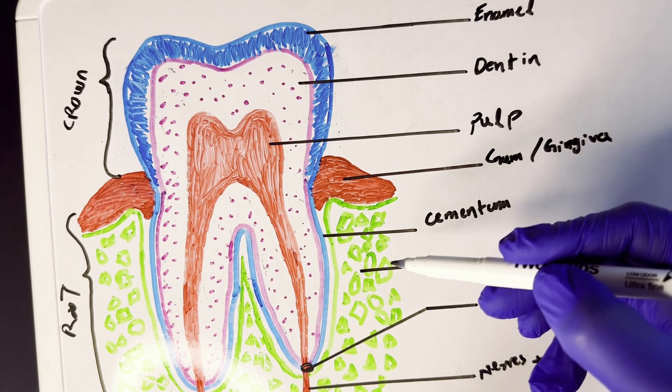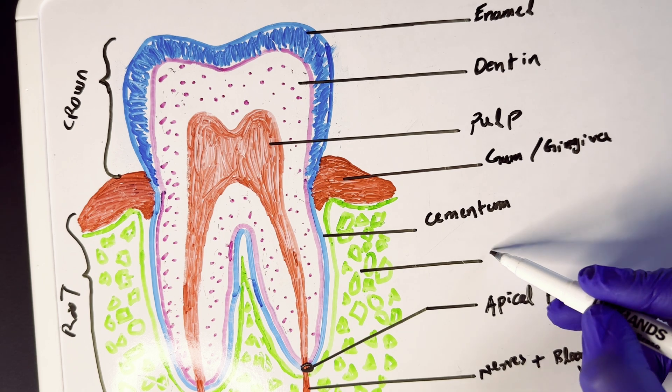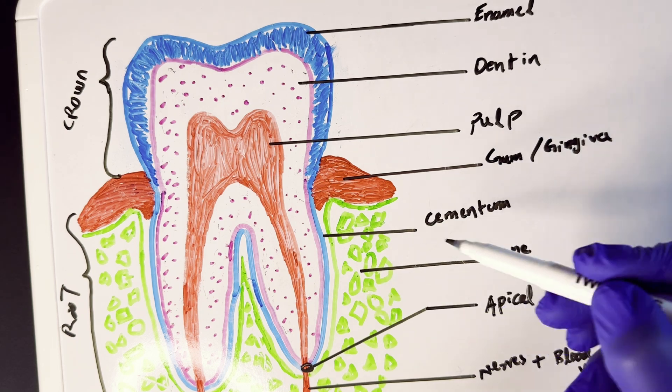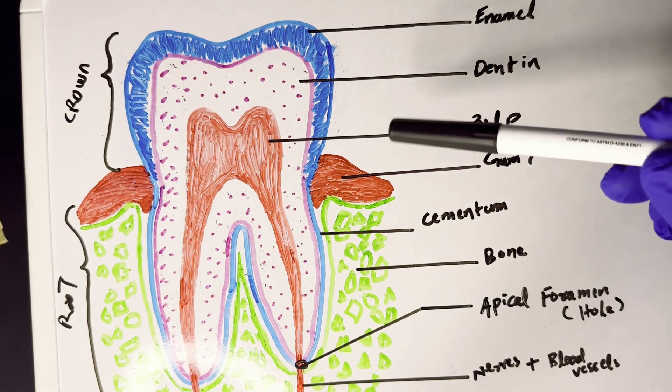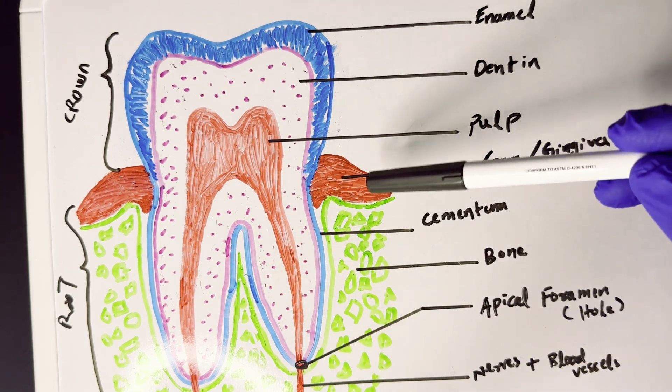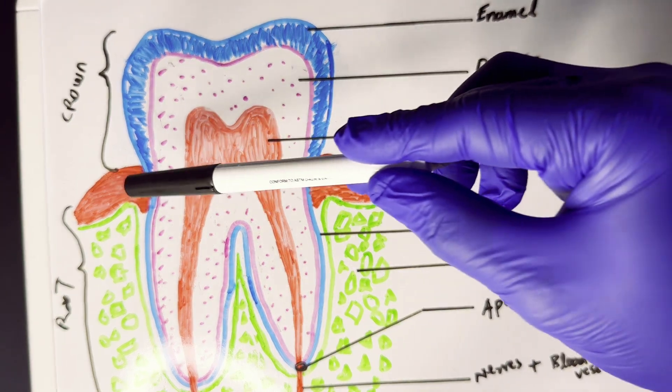And the green structure that I've drawn here is the bone, or the bone socket in which the tooth is lodged over here, your jawbone. So that was a basic rundown of what your teeth are made of and what are the surrounding structures around the teeth as well.